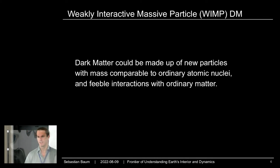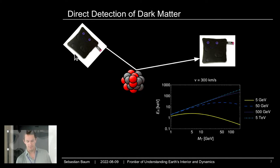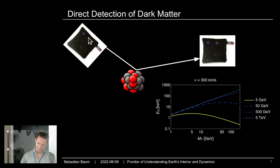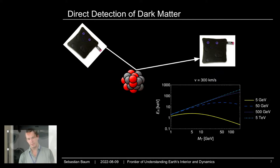But these particles do have very feeble interactions — some interactions remain. So what we do to search for them is called direct detection of dark matter. Thanks to these very feeble interactions, one of these dark matter particles — mass roughly comparable to an atomic nucleus, speeds of a few hundred kilometers per second — could hit an atomic nucleus. The dark matter would fly away, and the tiny energy deposited gives the nucleus a small kick — what we call a nuclear recoil. This is classical mechanics: elastic collisions, like billiard balls bouncing off each other.